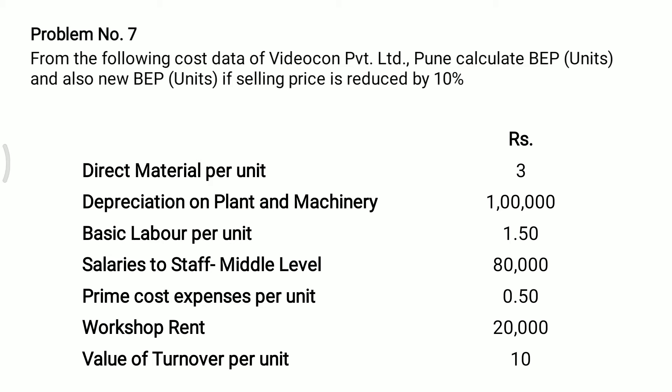We need to calculate BEP in units, and if our selling price is reduced by 10 percent, we will calculate new BEP units. Variable cost consists of direct material per unit, basic labor per unit, and prime cost expenses per unit. Fixed cost is the combination of depreciation, salaries, and workshop rent. Value of turnover per unit is considered as the selling price.